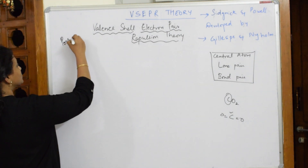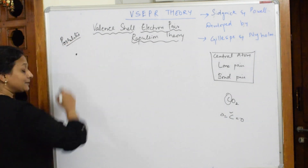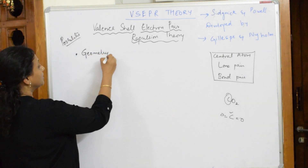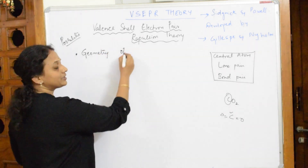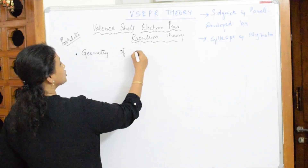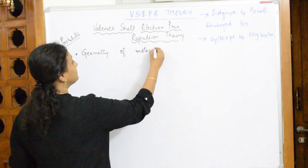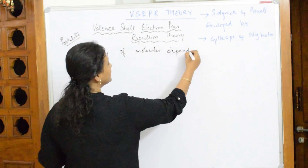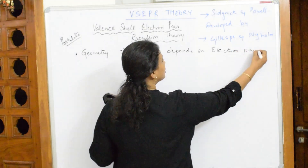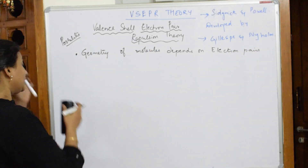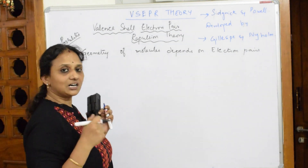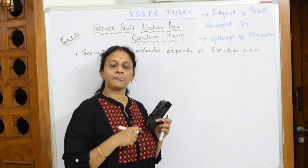The first postulate states that the geometry or shape of a molecule depends on its electron pairs. Electron pairs include lone pairs (LP) and bond pairs (BP). These electron pairs are concentrated around the central atom. Whether the shape is linear, planar, trigonal, or pyramidal — everything depends on the electron pairs present.